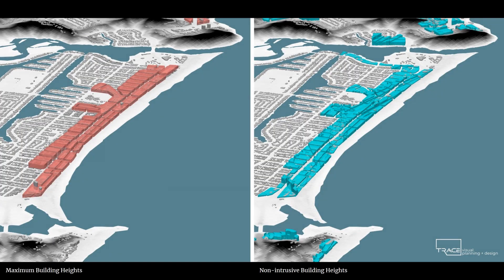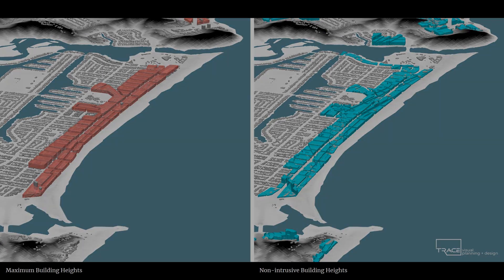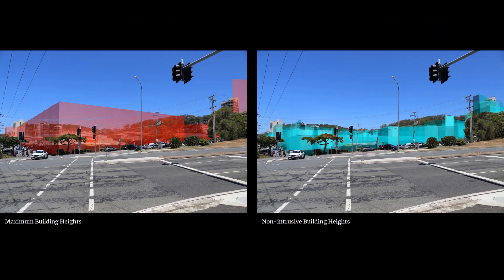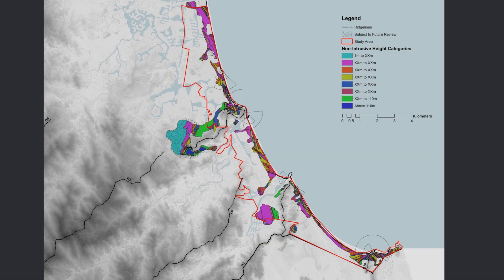Through the conversion of skyline thresholds to raster elevations and applying an overlay technique, the non-intrusive building heights were modeled for the study area, presented in 3D models comparing the maximum building height, and also presented through photo montages from selected view corridors, and combined in a non-intrusive building height map for integration in a city plan and amendments.